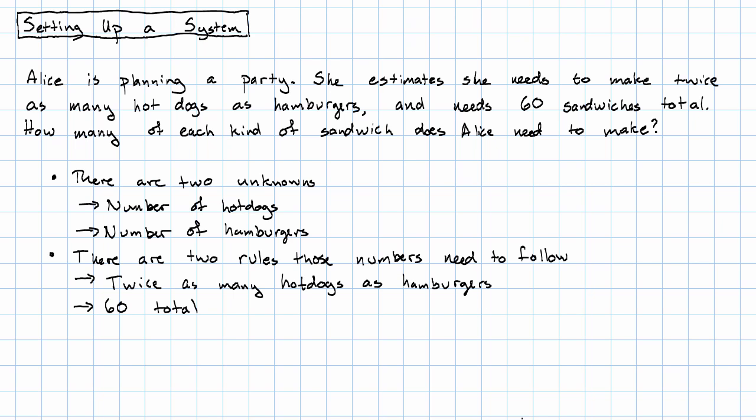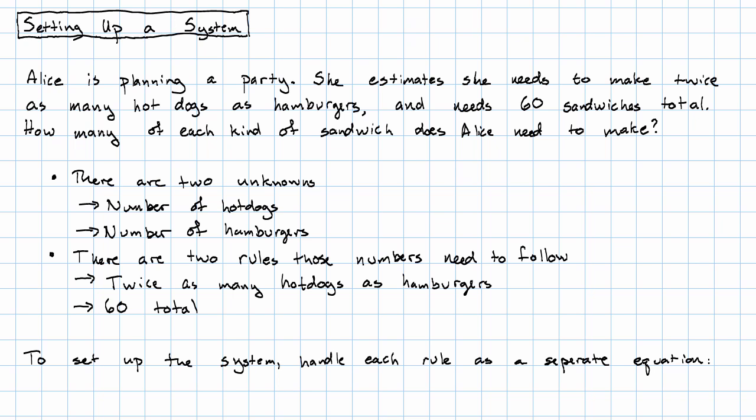What do we do? In order to set up the system, we handle each rule as a separate equation. So let's give these variables names. Let's say D is the number of hot dogs, and B is the number of hamburgers. Not calling either one H, because they both start with H. Neither one of these is obviously the independent variable. We'll only deal with that if we need it.